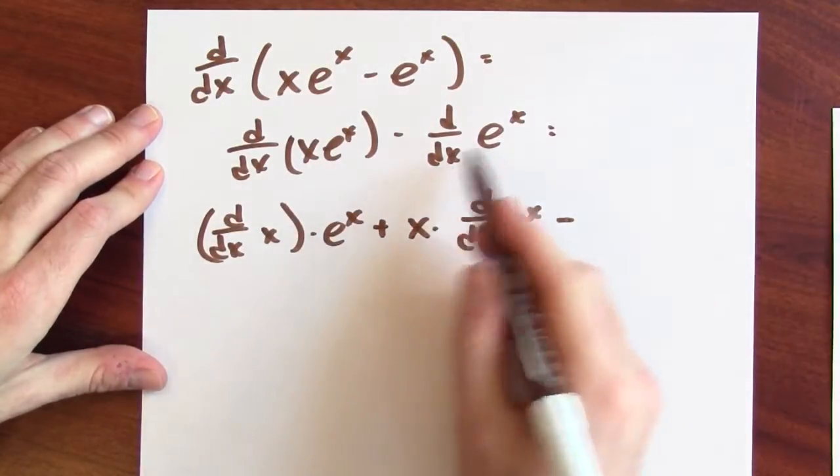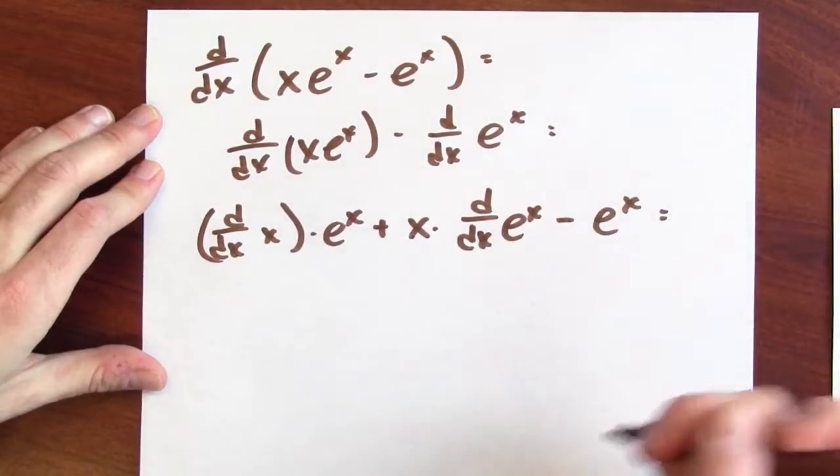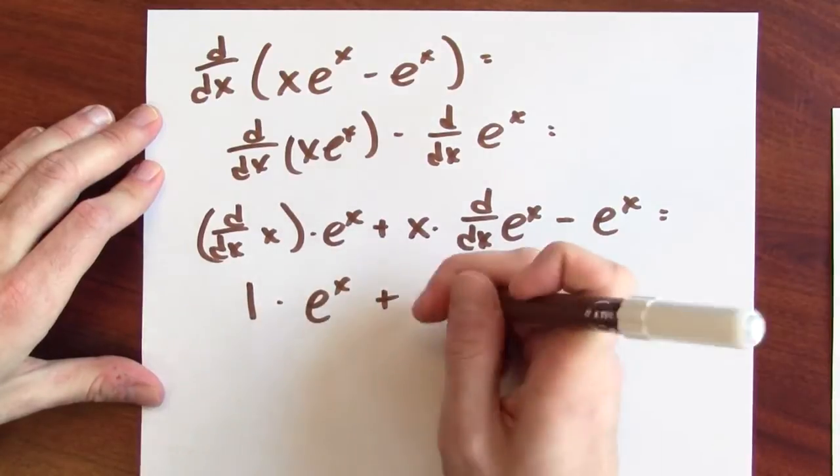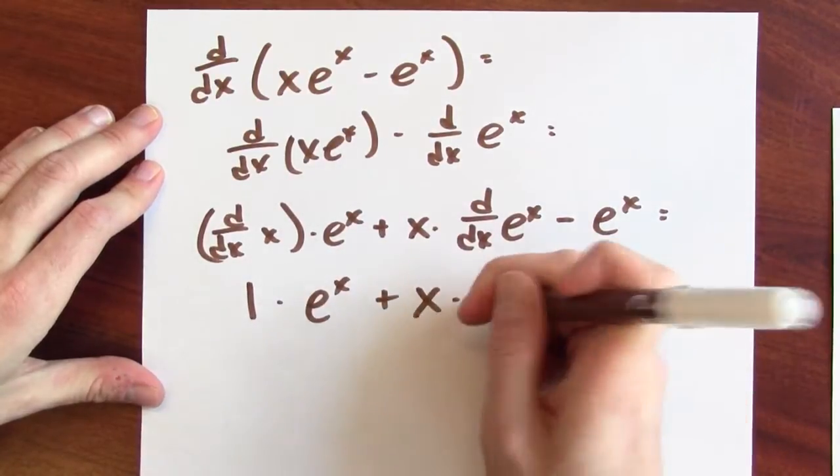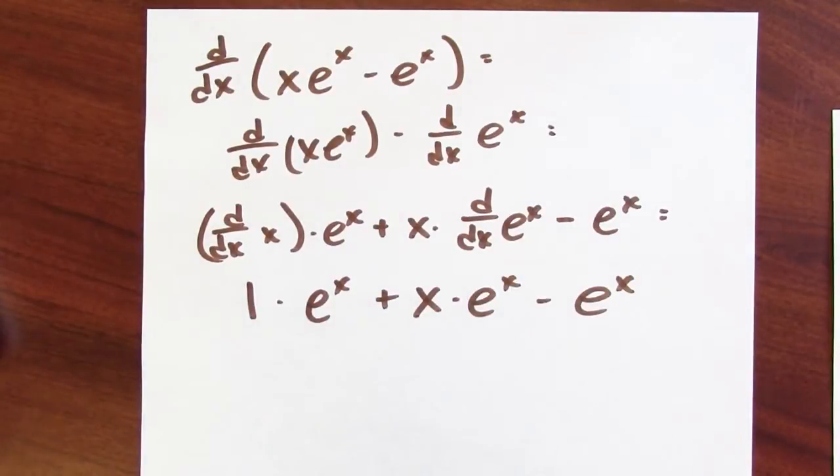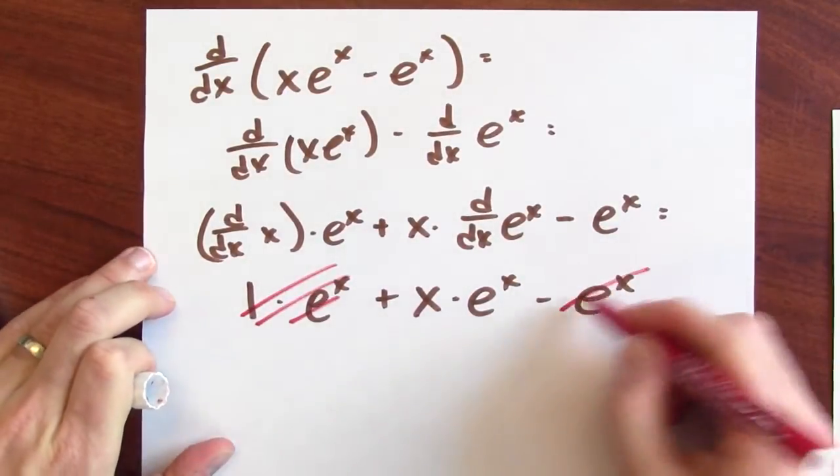And then I subtract. Well, the derivative of e to the x is just itself. And now, I've got the derivative of x, which is 1 times e to the x plus x times the derivative of e to the x is e to the x minus e to the x. And here's the slightly exciting part, right? This and this cancel.